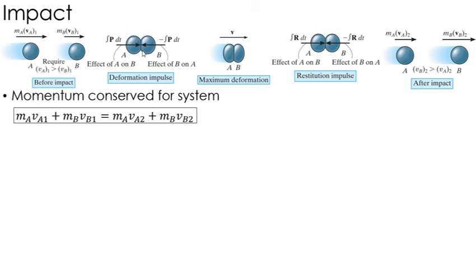Now, that gives me one equation, but there's still two unknowns. I need another equation, which is the coefficient of restitution. So if I just look at particle A alone, it has an initial momentum. It has a deformation impulse from B onto A, causing a new momentum at my maximum deformation where M_A times the velocity of the two going together.